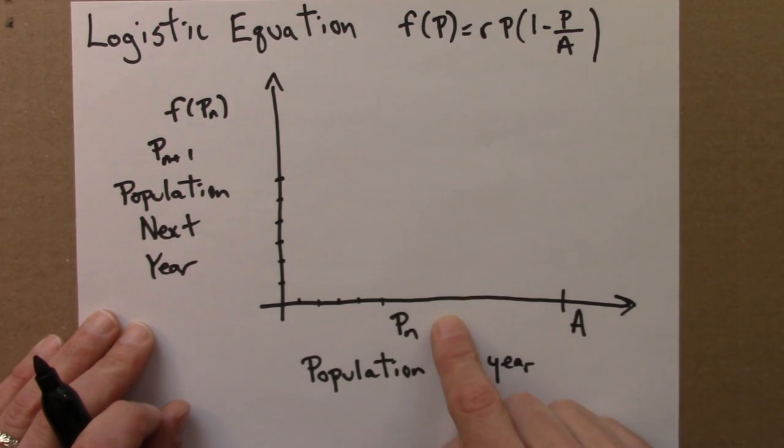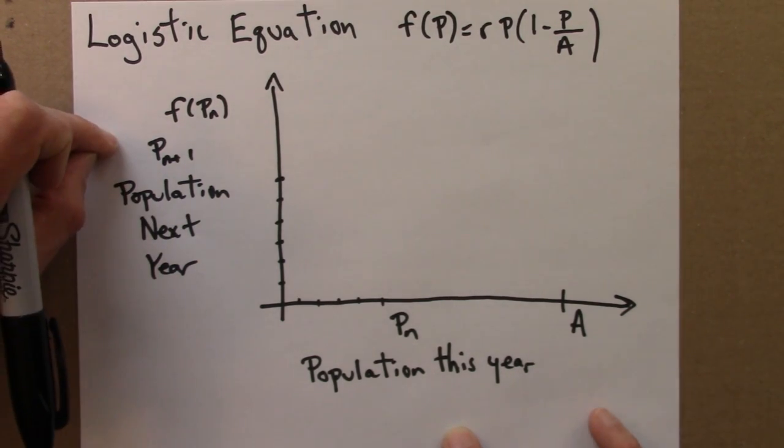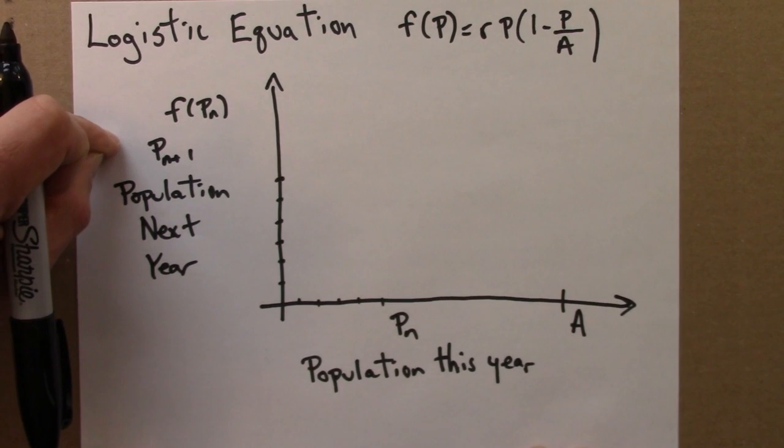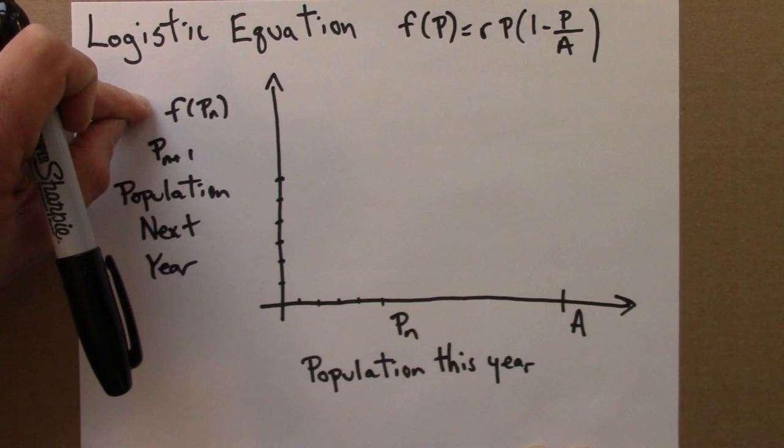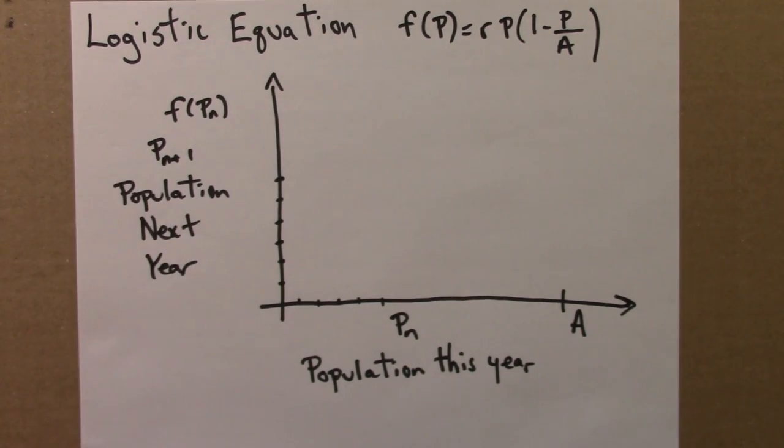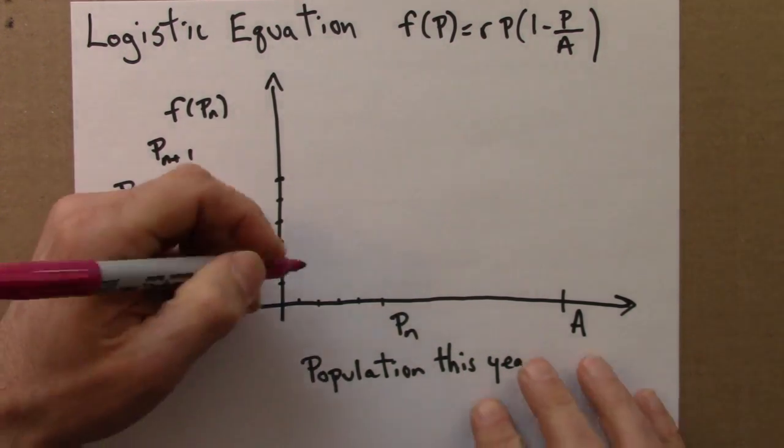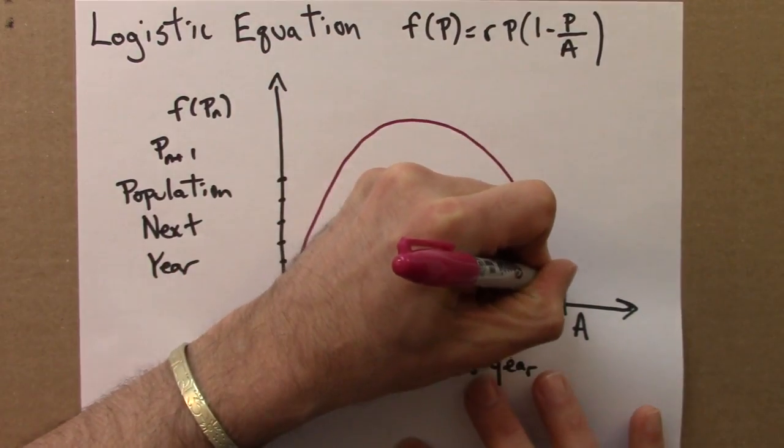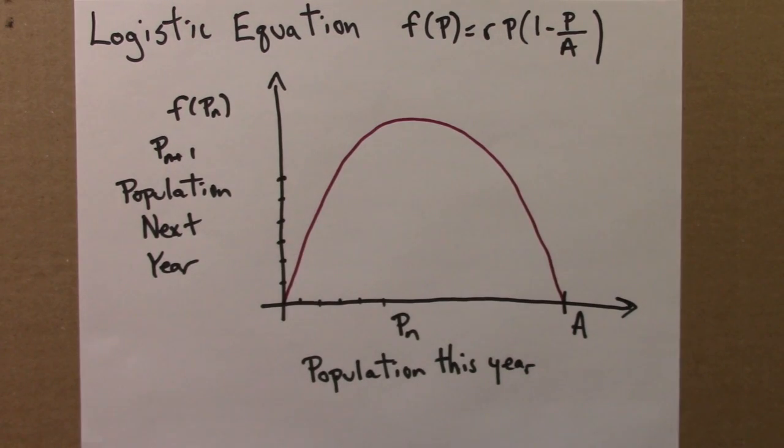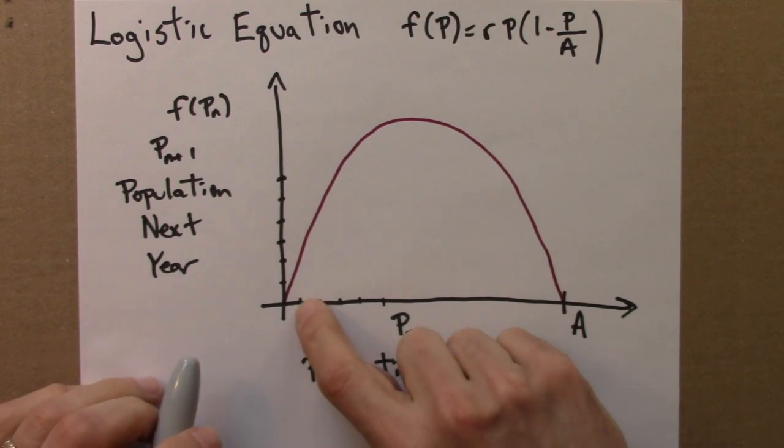On the horizontal axis, I'll have p n, the population this year. And on the vertical axis, this function tells me what the population will be next year. So this next year's population, you could call it f of p or p n plus 1. So let's make a quick sketch of this function. And it turns out that it looks like this. It's an upside-down parabola.